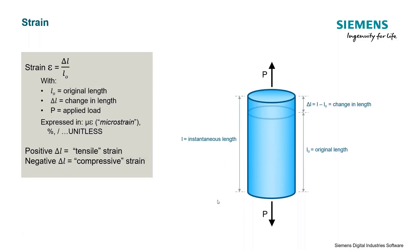Strain is the change in length over the original length of the part. When I apply some load to this bar, the bar will deform, and the change in length divided by the original length is the strain on the part. Strain is a unitless quantity because it's a length over a length, but it is typically expressed as microstrain — that dimensionless value multiplied by 10 to the minus 6. You might also see strain expressed as micrometers over meters, or sometimes just meters over meters.